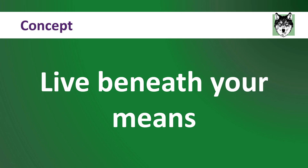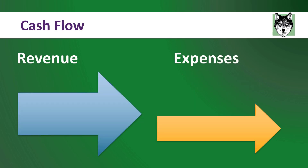Whether we're talking about a business or personal finance, you will have a certain amount of funds coming in as revenue and a certain amount of funds going out as expenses. This is your cash flow. Your planned monthly expenses need to be lower than your revenue.